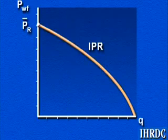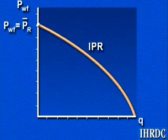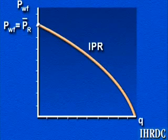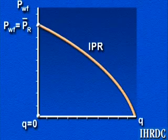When the bottom hole flowing pressure is equal to the average reservoir pressure, there is no flow. That is the point on our graph where P sub R bar equals P sub WF, and the flow rate, Q, is zero.